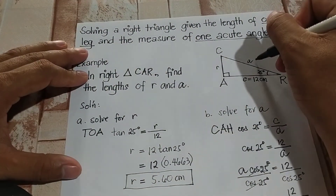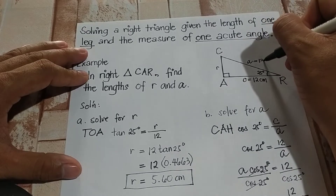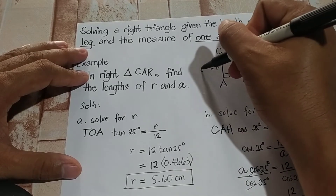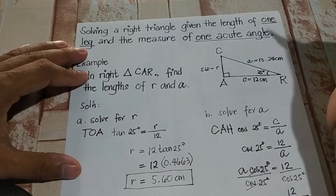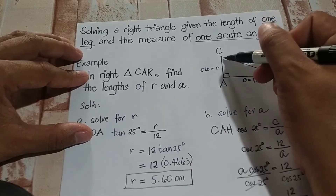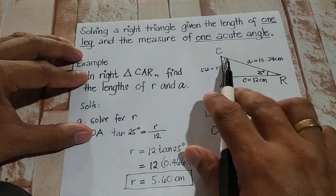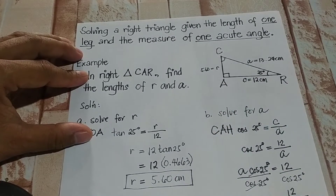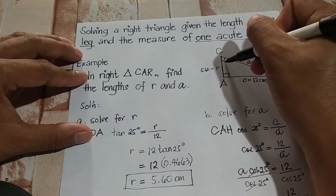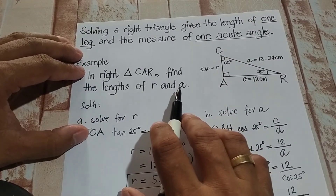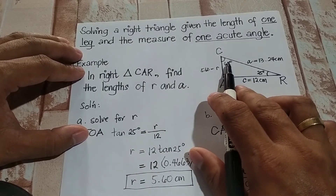So in our illustration, side A is 13.24 cm and side R is 5.60 cm. If asked for the measure of angle C, you just subtract: 90 minus 25 equals 65 degrees. So the measure of angle C is 65 degrees.